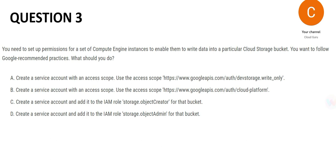The options with IAM role are C and D. C — create a service account and add it to the IAM role storage.object.creator for that bucket. D — create a service account and add it to the IAM role storage.object.admin for that bucket. The only difference between C and D is creator versus admin. The creator creates; the admin is the administrator and has access to everything.